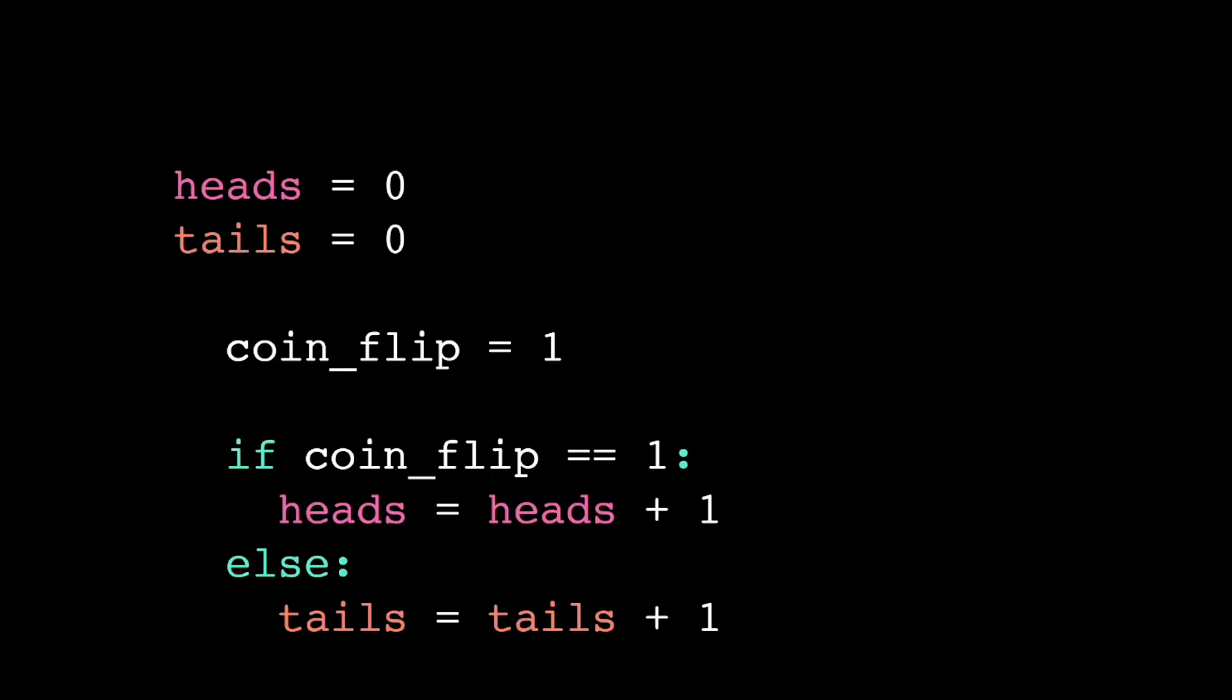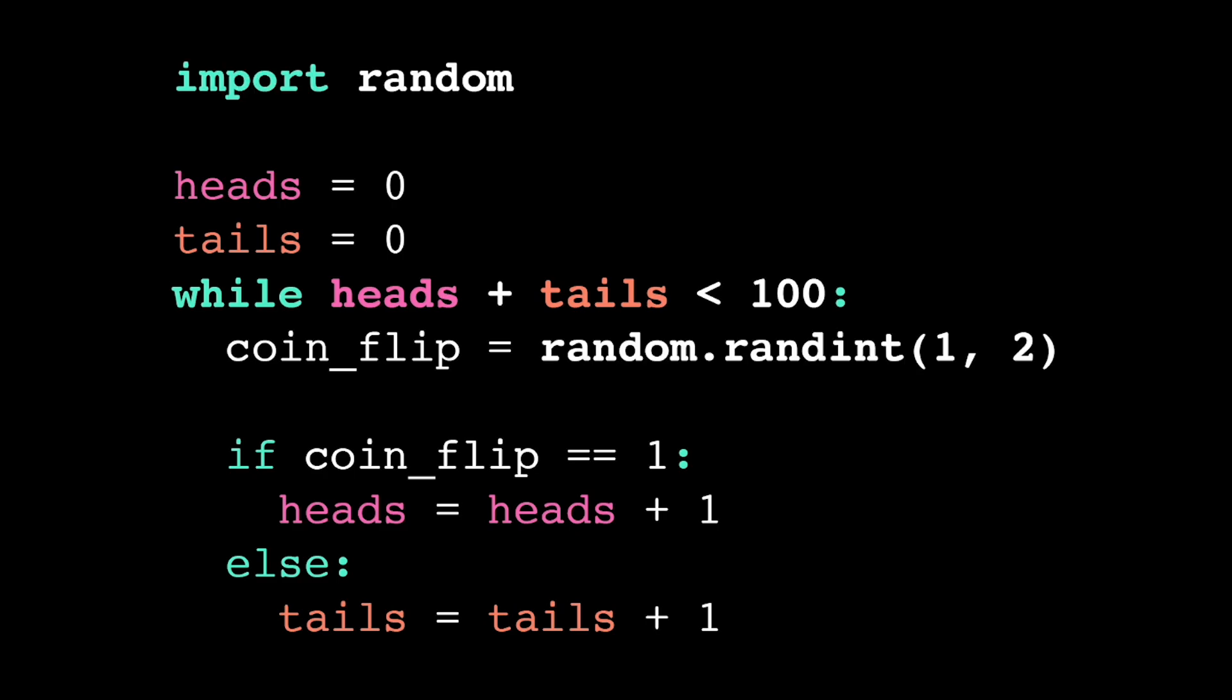With just conditionals and variables, we can start to write our own basic simulations in Python. We're only missing two things. We need to be able to repeat our experiments, and we need to be able to model some of the randomness that occurs in the real world.